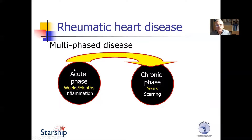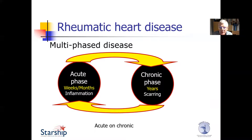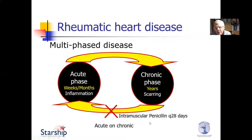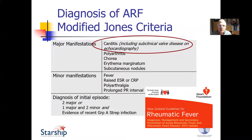What about rheumatic heart disease? This is a multi-phase disease. There's an acute phase with inflammation lasting weeks to months, and a chronic phase over years resulting in scarring of the chordal apparatus and valve leaflets. In children with recurrent strep infection, there's this cycle of acute-on-chronic inflammation. Benzathine penicillin can interrupt that cycle. The diagnosis of acute rheumatic fever has been by the Jones criteria, and these have been modified over the past decade to include subclinical valve disease as a major criterion — echocardiographically detected valve disease.